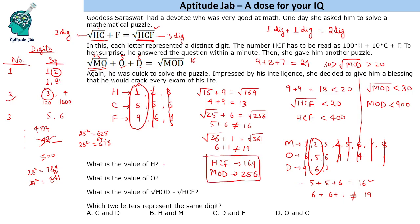So now we can answer the questions. The value of H is 1. Value of O is 5. MOD minus HCF is 16 minus 13 which is 3. Which two letters represent the same digit? So we have 6 as a digit which is being repeated and C and D represent the same digit.